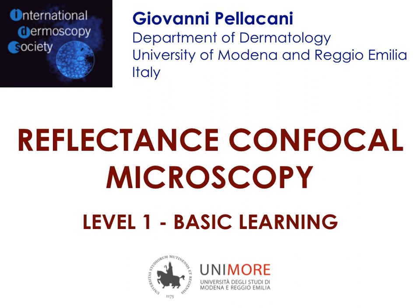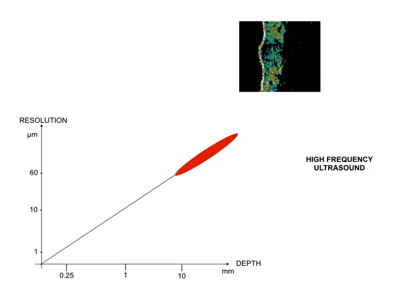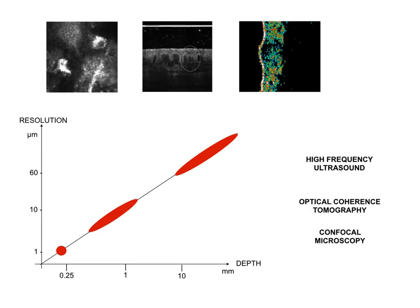Reflectance Confocal Microscopy is an in vivo, non-invasive tool for imaging the skin in depth and at a microscopic resolution. Compared with other techniques such as ultrasound and optical coherence tomography, confocal microscopy allows higher resolution enabling visualization of single cells, but at a shallow depth limiting imaging to 250 microns, corresponding to the superficial dermis.